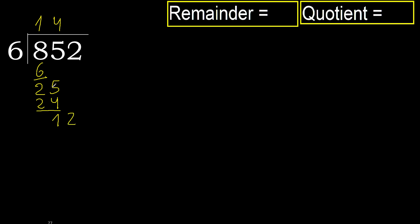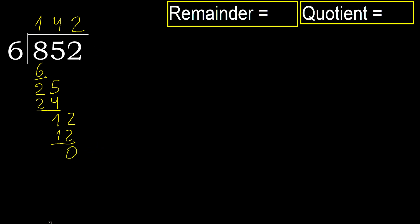Bring down 12. 6 multiplied by 3 is 18 — greater. Multiplied by 2 is 12 — not greater, ok. Subtract: 12 minus 12 is 0. Next there is no number, therefore finish.